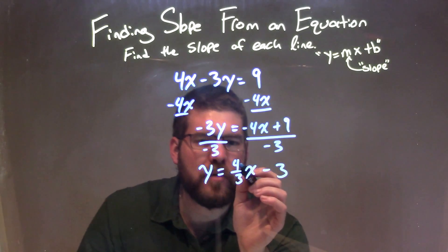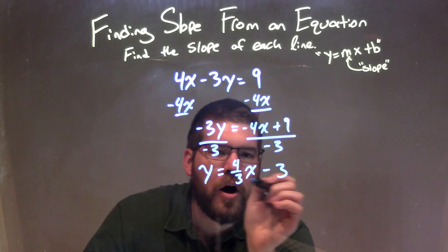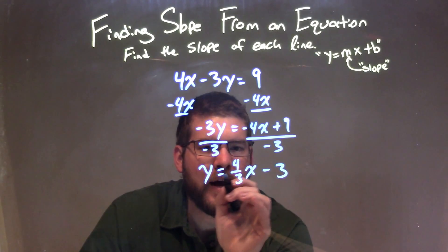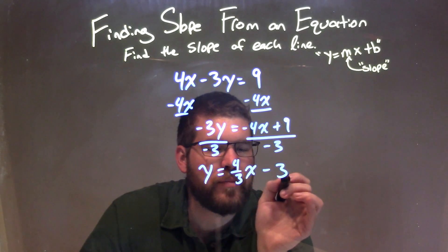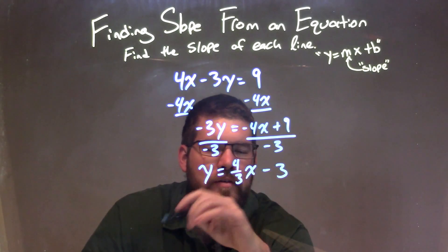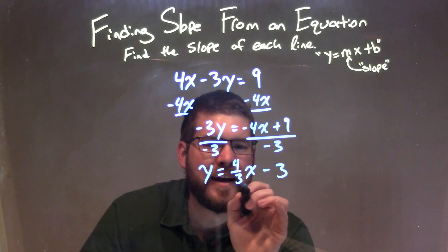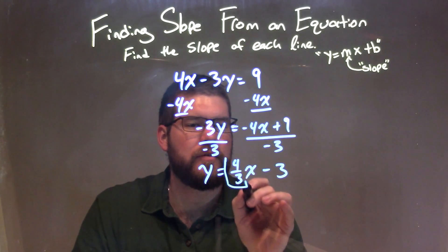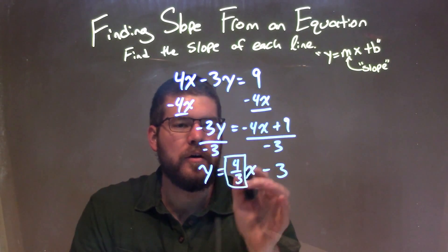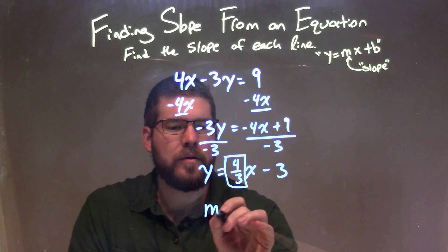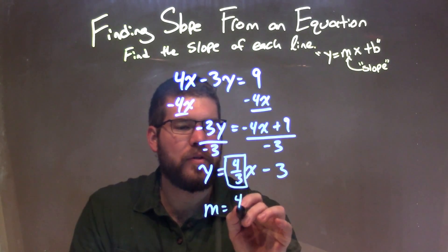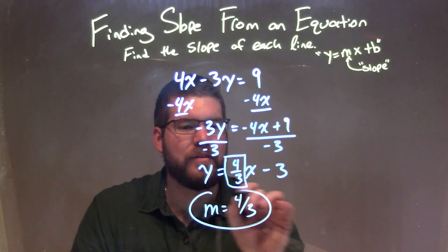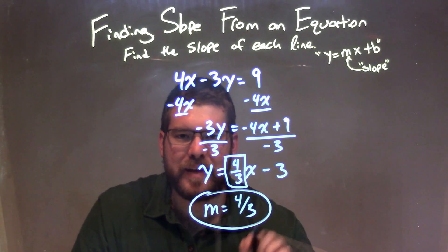So now we have our equation in y equals mx plus b form. We identify the slope, which is 4 thirds. So our slope here is 4 thirds, and that is our final answer.